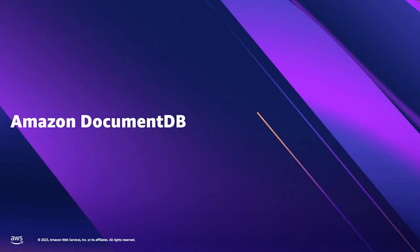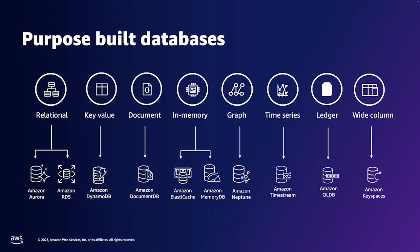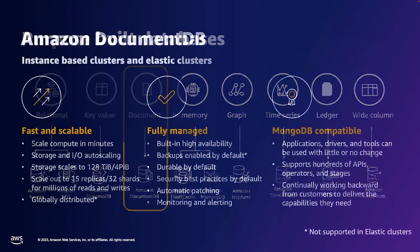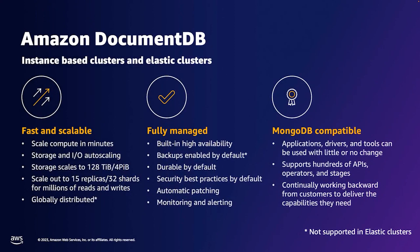Amazon DocumentDB is one of our purpose-built database services, and we particularly focus on use cases which need document data stores. What makes Amazon DocumentDB unique? There are three primary pillars. We are highly scalable, and we have separation of storage and compute, meaning we can scale them separately. Compute scales in minutes. Storage and IO are auto-scaling, so you don't have to do any operations there.